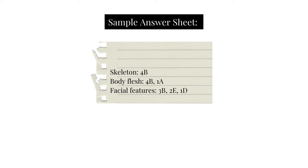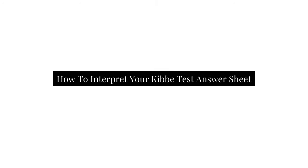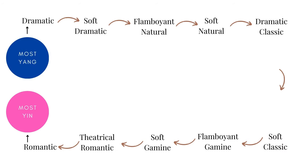After completing that — and for everybody else — you should have a sample answer sheet. Remember that the Kibbe system is a scale that measures how much yin, meaning the soft rounded aspect, or yang, the sharp angular elongated aspects, somebody has within their body.